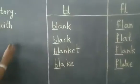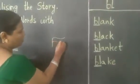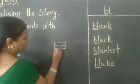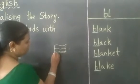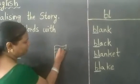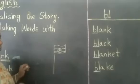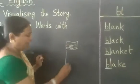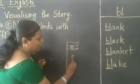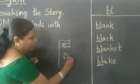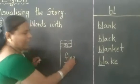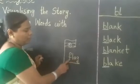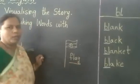Now, for example, children, you have to tell me what is this picture. What is this picture, children? This is a flag. So what is the spelling of flag? FLAG — F-L-A-G.